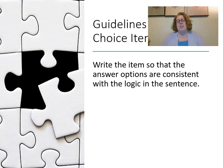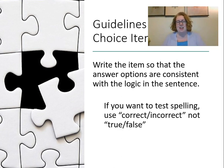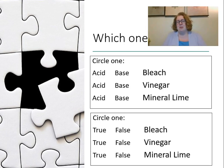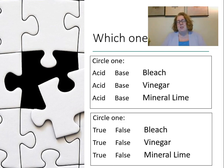Some guidelines: write items so the options are consistent with the logic of the sentence. If you're testing spelling, the options should be 'correct' or 'incorrect,' not 'true' and 'false.' For example, if I was testing acids and bases, the choices should be 'acid' and 'base,' not 'true' and 'false.' This is actually a really good use of binary choice because something is either an acid or a base, and that would be a great way to assess that in chemistry class.